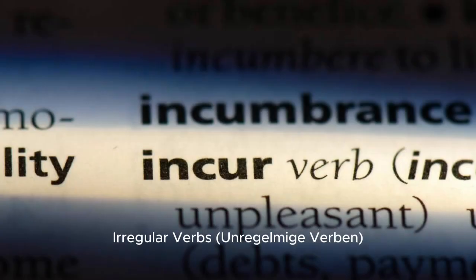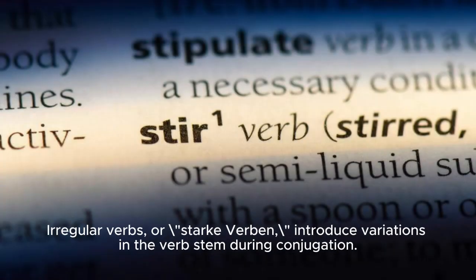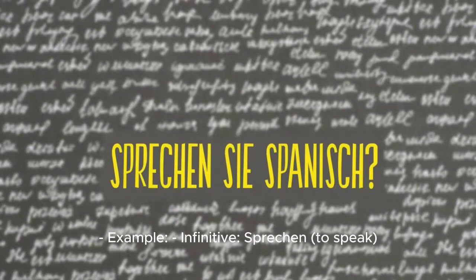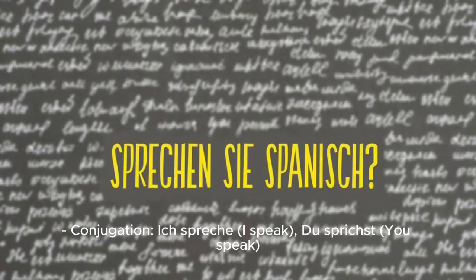Irregular verbs, or unregelmäßige Verben, also called starke Verben, produce variations in the verb stem during conjugation. Despite the stem changes, the endings follow the same pattern. Example — infinitive: sprechen (to speak); conjugation: ich spreche (I speak), du sprichst (you speak).